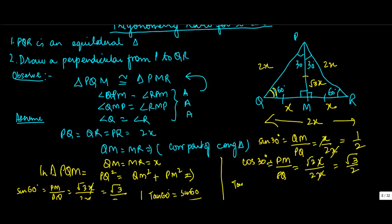And tan will be this upon this, 1 upon 2 times 2 upon root 3. Instead of dividing, I just reverse the order of this, giving 1 upon root 3.